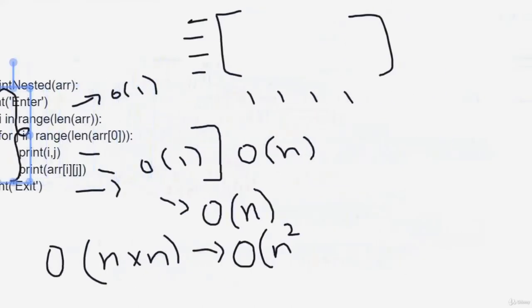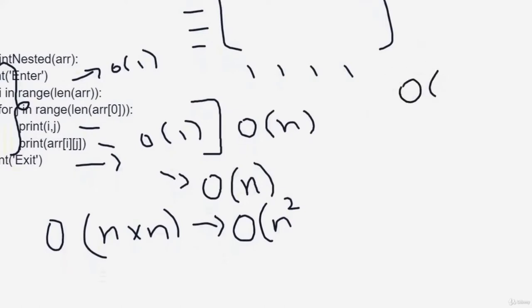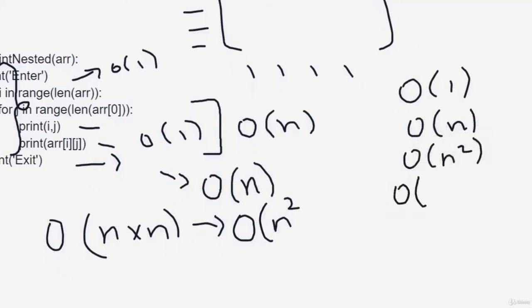Let's see some common complexities. There could be O(1), O(n) as we talked about, O(n²), O(log n) — log n is when you divide or reduce the number by 2. There is also O(2^n) which is exponential, and there can be O(n log n). We will continue to talk about these complexities as we do our algorithm coding in future sessions.